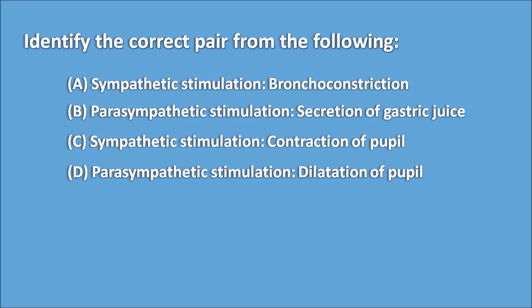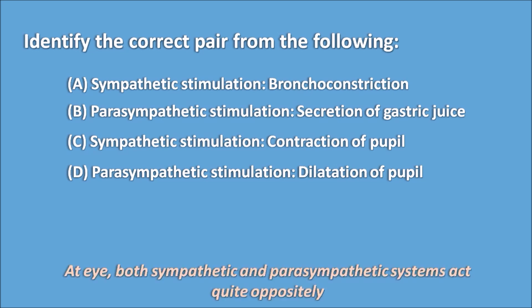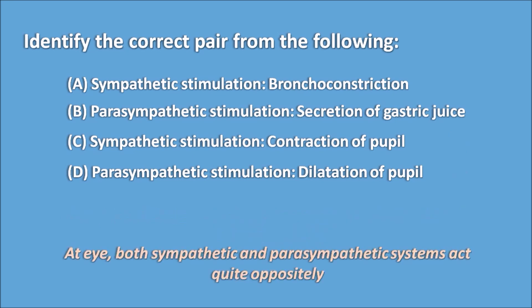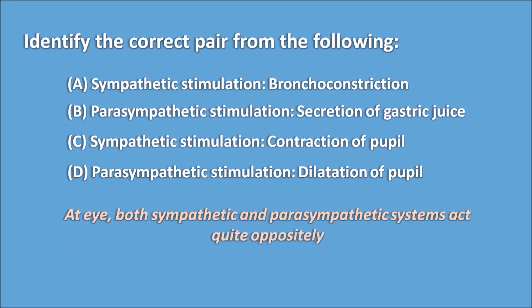If you apply knowledge of the actions of the sympathetic and parasympathetic systems, you can get the right answer. Parasympathetic stimulation produces secretion of gastric juice. Since both sympathetic and parasympathetic systems act quite oppositely, C and D are wrong. By eliminating options using the concept, the right answer is B: parasympathetic stimulation produces secretion of gastric juice.